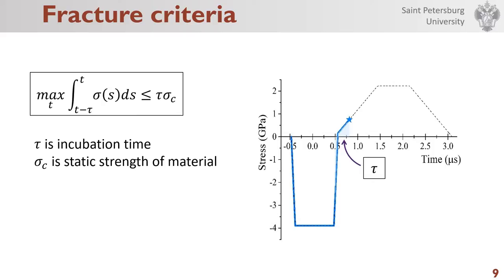Then, the cross section where the fracture criteria is fulfilled earlier than in the others will be the spall section.